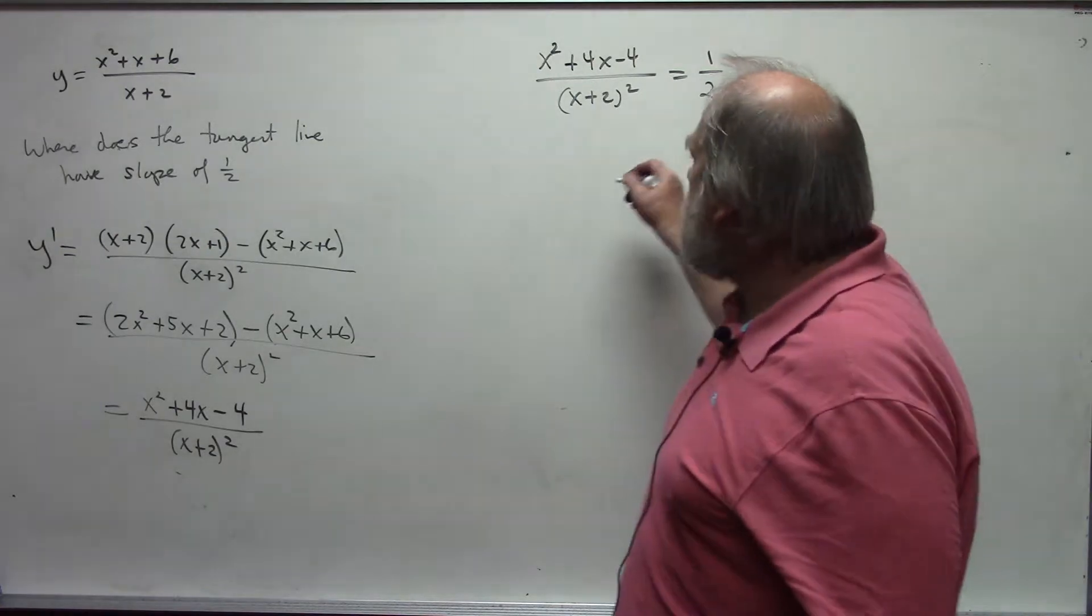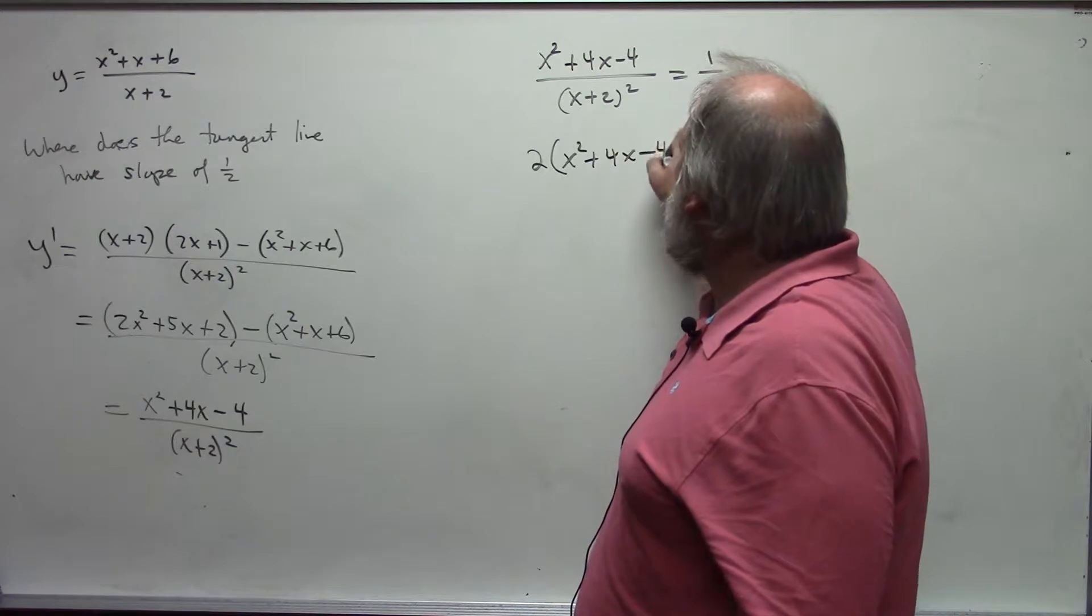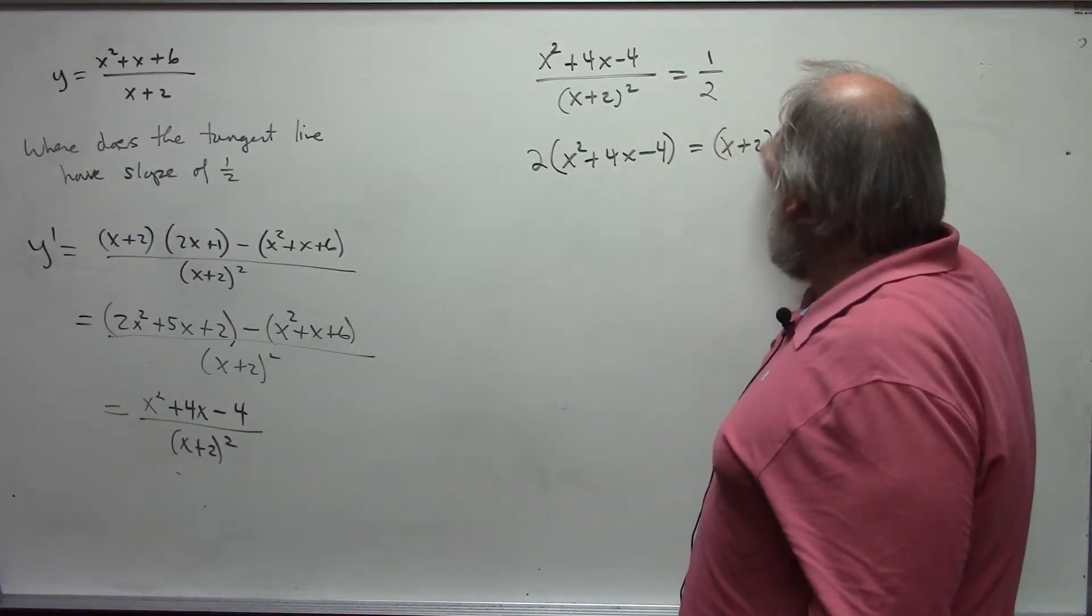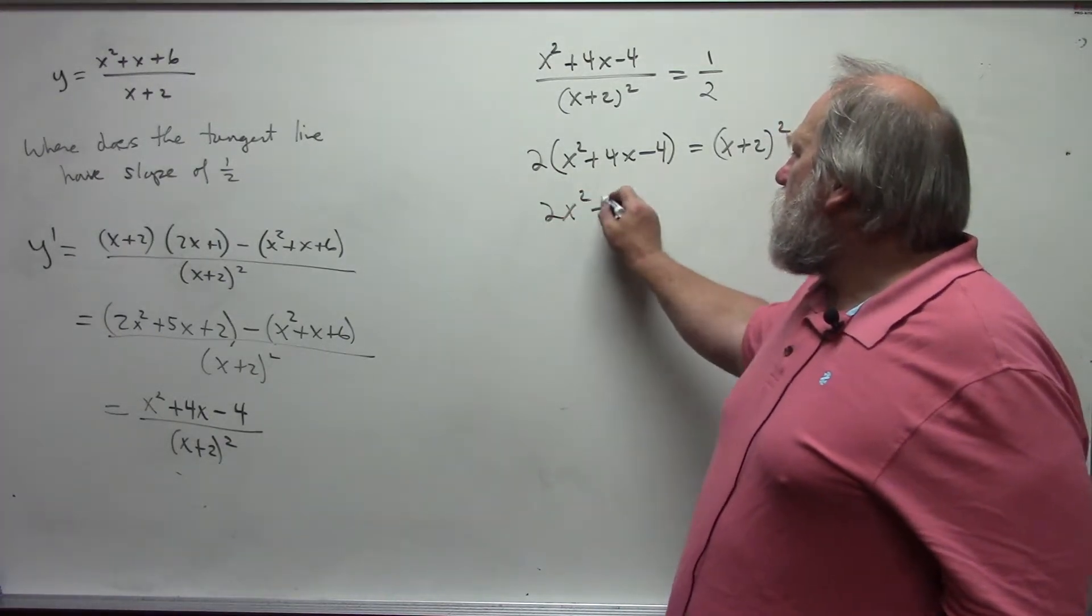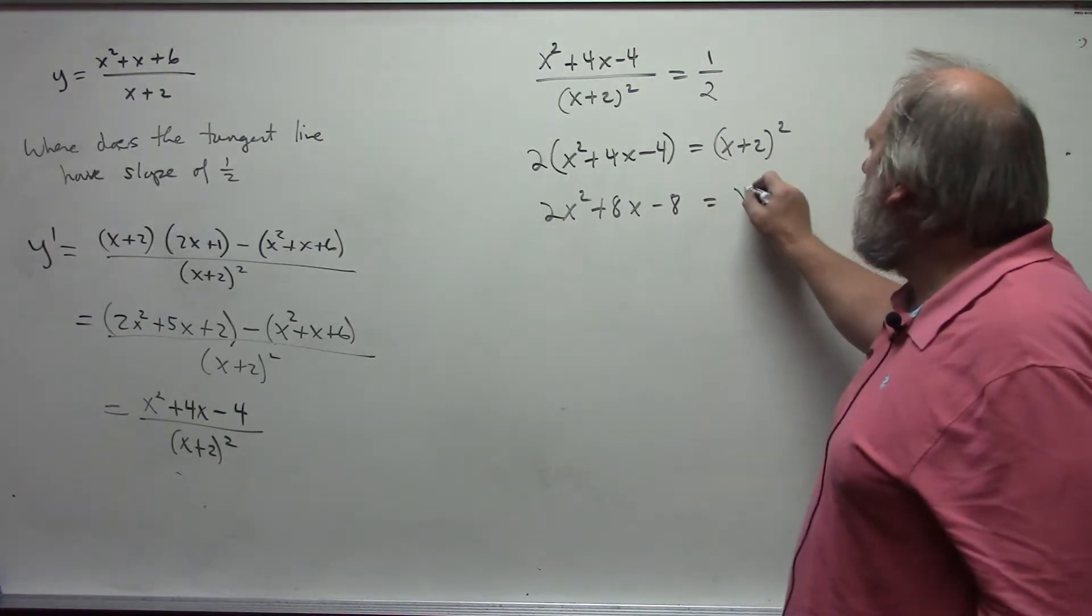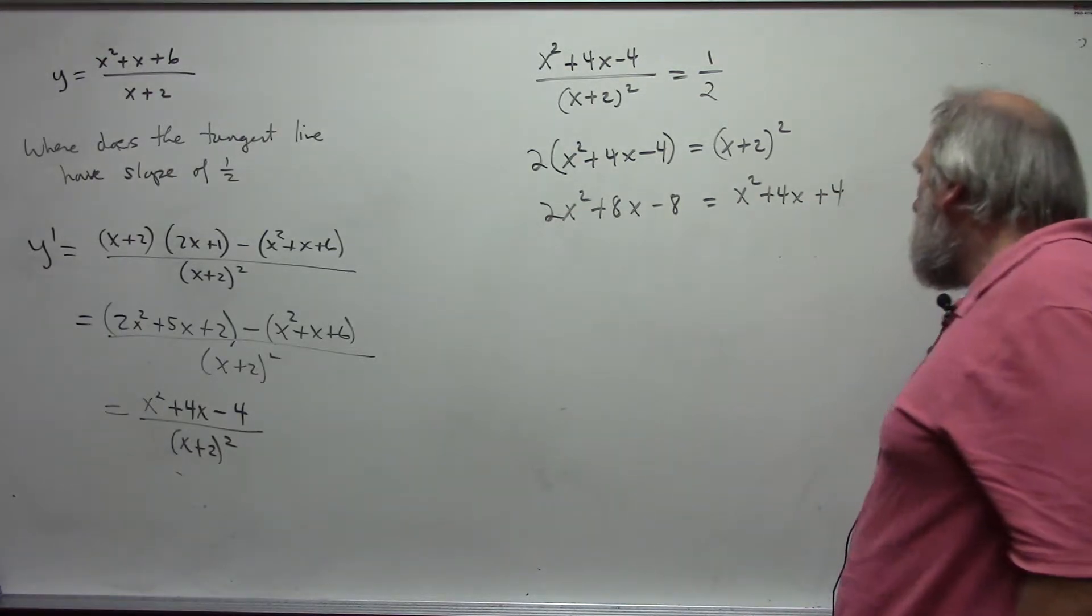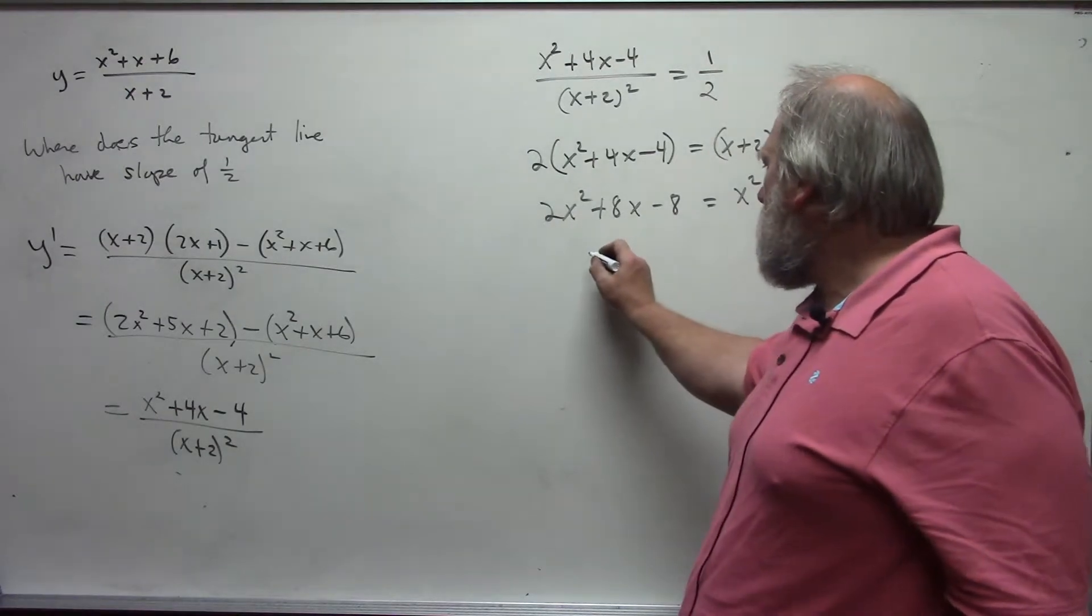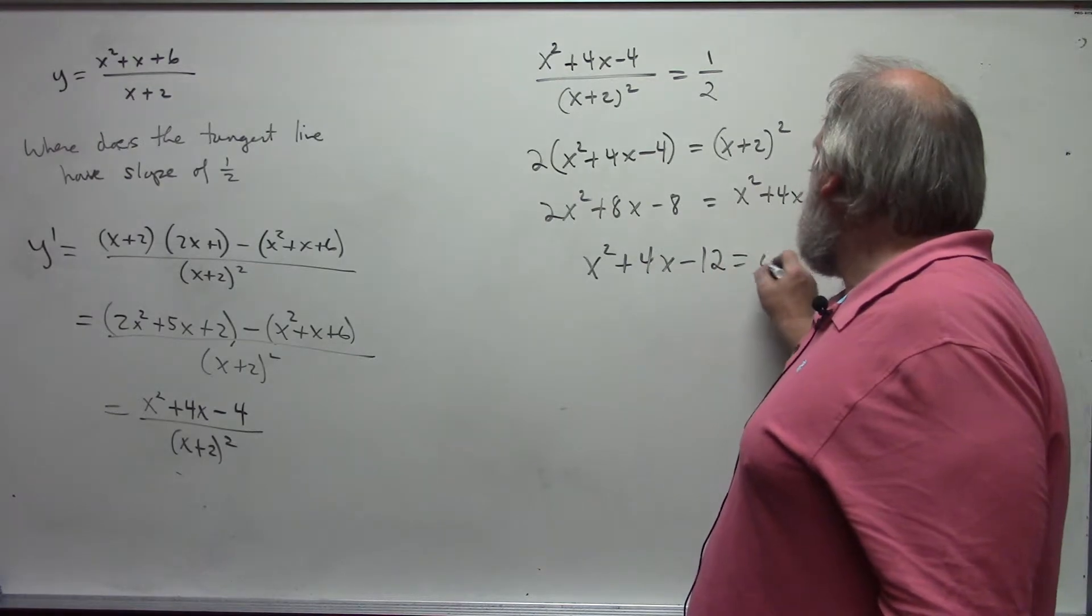Don't write it equal 1 half down here. The derivative is a function. I want to know where this is equal to 1 half. We're changing it into an equation. And I need to solve this, so I get 2 times x squared plus 4x minus 4 is equal to x plus 2 quantity squared. Which gives me 2x squared plus 8x minus 8 is equal to x squared plus 4x plus 4. Make sure you remember your middle term. We've got a quadratic equation here. Let's set it up correctly. x squared plus 4x minus 12 is equal to 0.